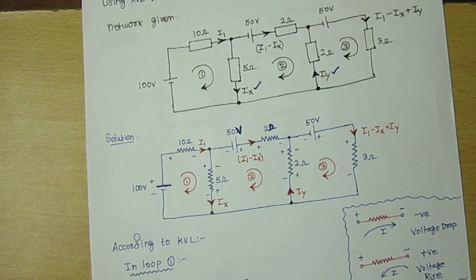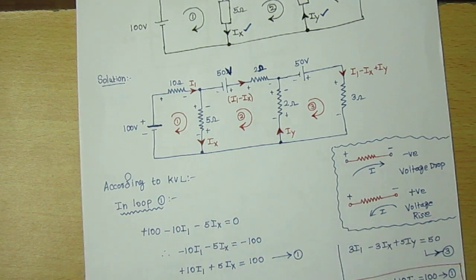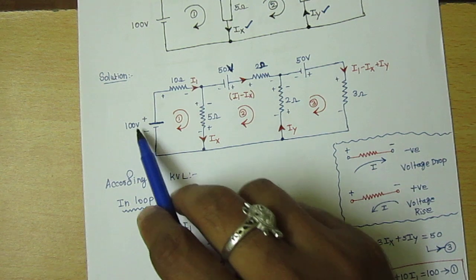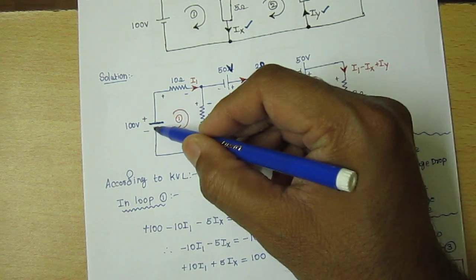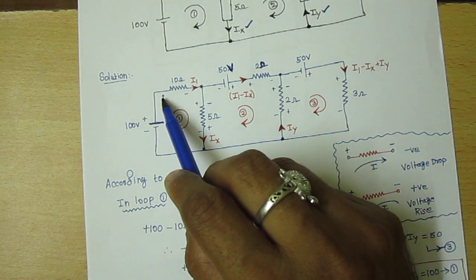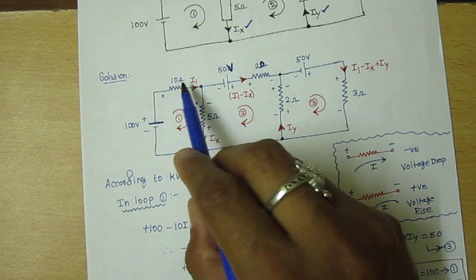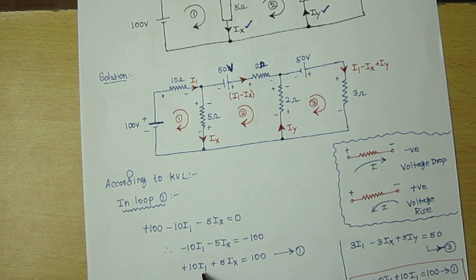In loop 1, applying KVL — Kirchhoff's voltage law states that the sum of voltages in any closed loop is equal to zero. Moving clockwise, from lower to higher value we put positive: +100. Then from higher to lower value, voltage drop: −10I1. Here also from higher to lower value: −5Ix. Simplifying gives 10I1 + 5Ix = 100. Consider this equation 1.